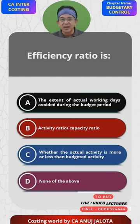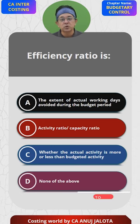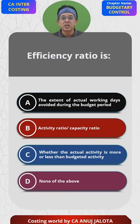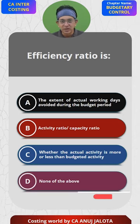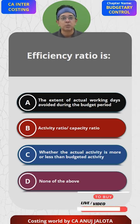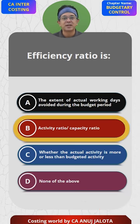Now whatever I told right now is neither there in A, B, or C. So let me use another way of explaining. If you remember from variances, we arrive at ratios. The volume ratio is also called the activity ratio, which is the product of capacity ratio and efficiency ratio. So activity ratio equals capacity ratio multiplied by efficiency ratio. Therefore, efficiency ratio can be calculated as activity ratio divided by capacity ratio. So out of the four options, the answer should be B. That is the correct answer.